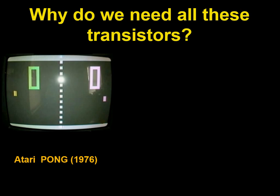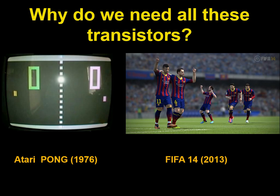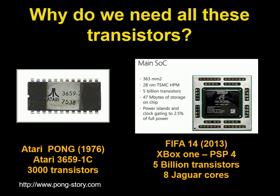You probably know Pong — if you go to a vintage video game website you can see it's basically a sort of tennis with two joysticks. And then in 2013 you have FIFA 14, with FIFA 17 coming out in a few days. The computational capabilities needed for that type of video game are completely different. The main difference is the number of transistors: Pong had as its main chip the Atari 3659 IC — a dedicated integrated circuit just to play Pong, not a general-purpose processor — and it had 3,000 transistors on board.